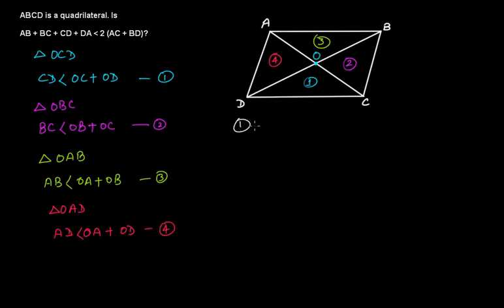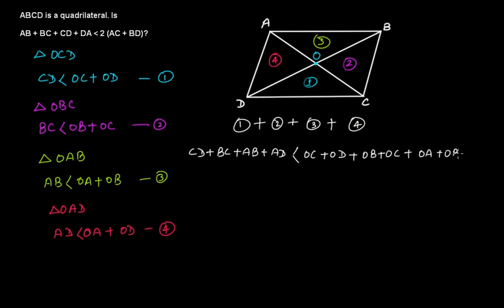If we add all these, one plus two plus three plus four, add all them. So CD plus B, C plus A, B plus A, D. This will be less than all these right hand side things. So O, C plus O, D plus O, B plus O, C plus O, A plus O, D.